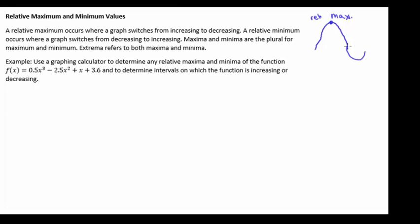If we continue on, we're decreasing and then we switch—this is a minimum, a relative minimum. If that happened to be the absolute lowest point on our graph, it'd be an absolute minimum. If you see maxima and minima, that's the plural for maximum and minimum. The term extrema refers to all your extreme points, so both maxima and minima.